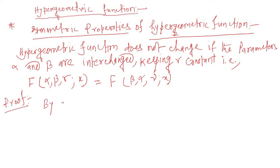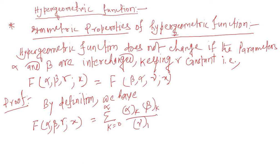By definition, we have F(α, β, γ, x) is equal to summation k equals 0 to infinity: (α)_k (β)_k over (γ)_k into x to the power k over k factorial, which equals summation k equals 0 to infinity...